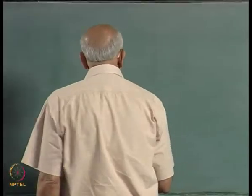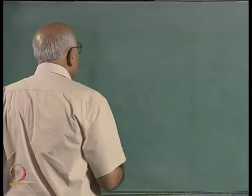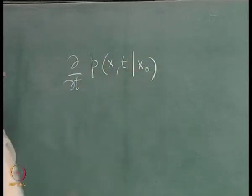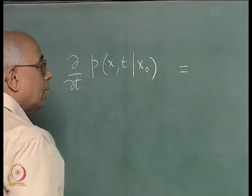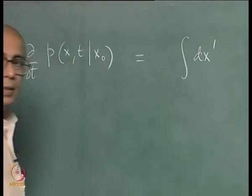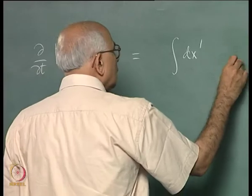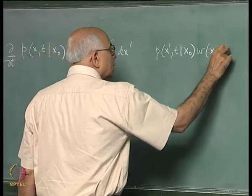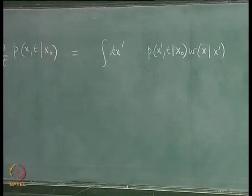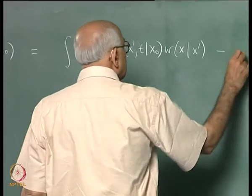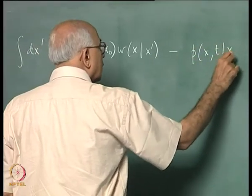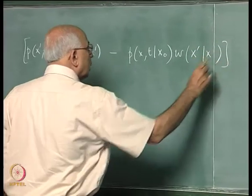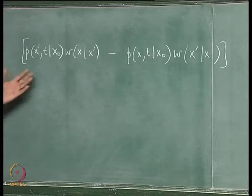In continuous time, this probability density obeys a certain master equation. We wrote this as ∂/∂t p(x,t | x₀) equal to an integral over all intermediate states x' of p(x',t | x₀) multiplied by the transition rate to go from x' to x, minus p(x,t | x₀) multiplied by the transition rate to go from x to x'. This is a gain term minus a loss term.